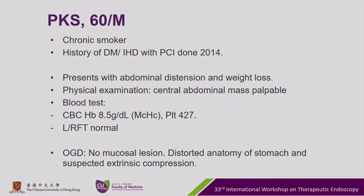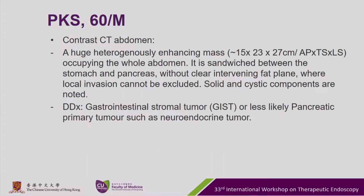An OGD was performed showing no mucosal lesion, but rather a distorted anatomy of the stomach and suspected extrinsic compression. Hence a contrast CT abdomen was performed, showing a huge heterogeneously enhancing mass up to 27 centimeters in the abdomen with solid and cystic components.